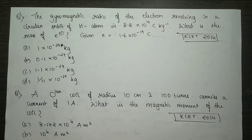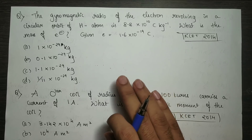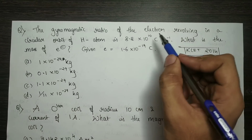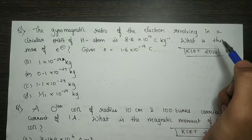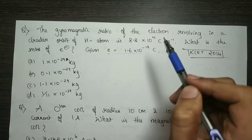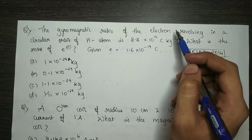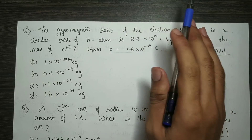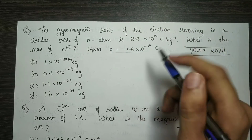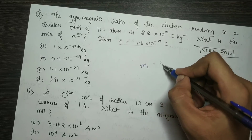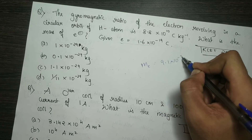Next question: the gyromagnetic ratio of the electron revolving in a circular orbit of a hydrogen atom is 8.8 × 10¹⁰ coulomb per kg. What is the mass of the electron? The charge of the electron and the gyromagnetic ratio are given. We know the mass of the electron is 9.1 × 10⁻³¹ kg.